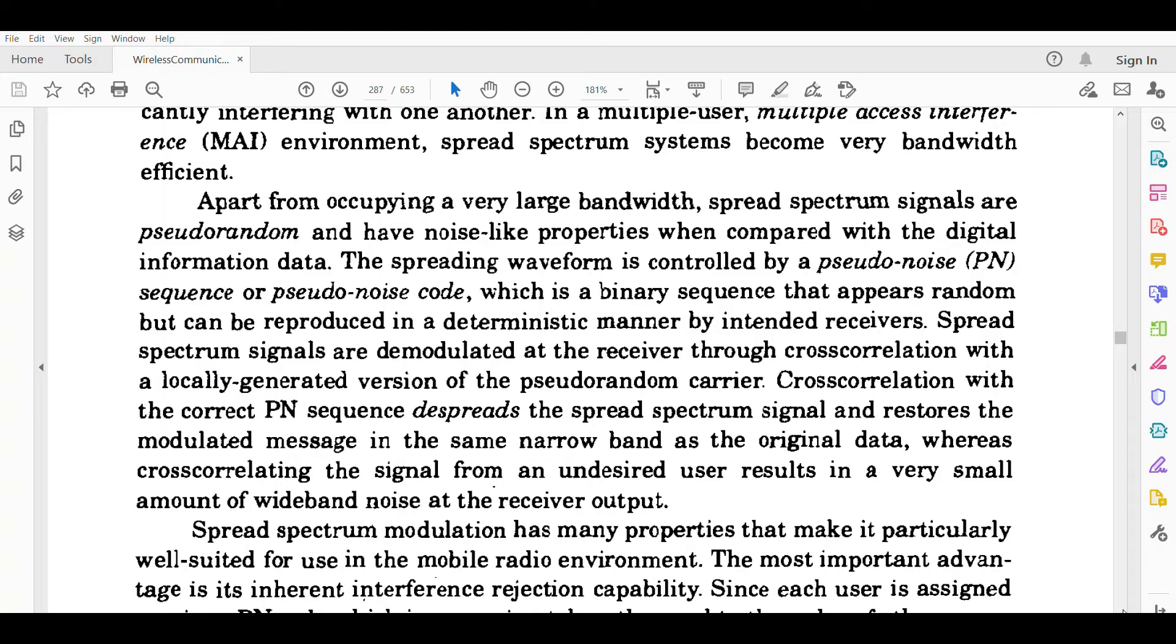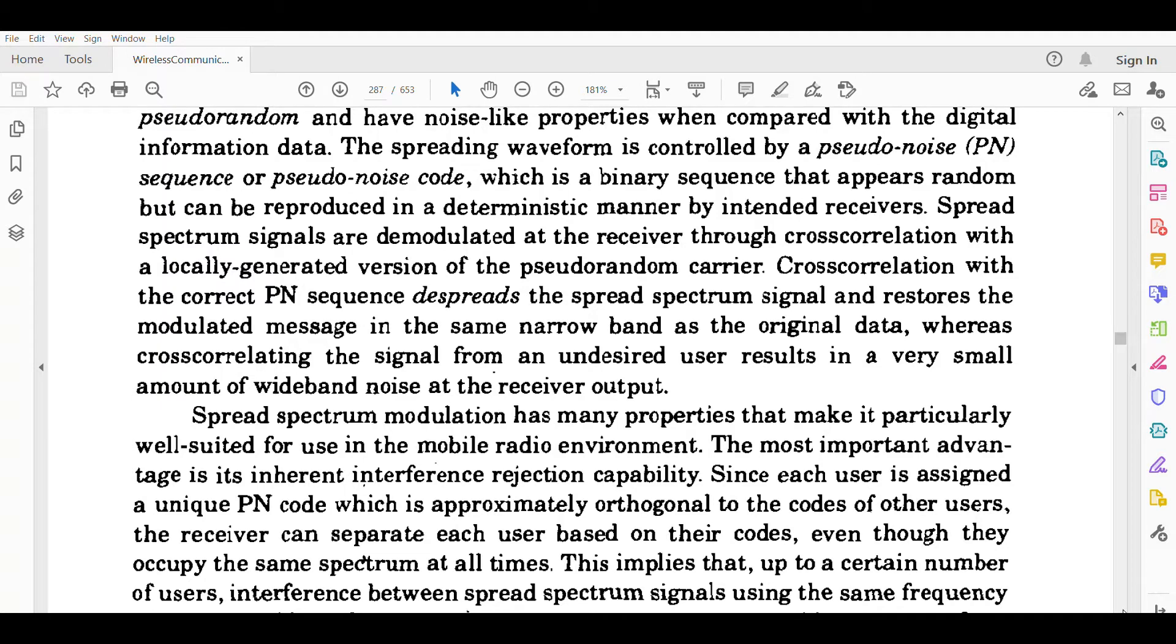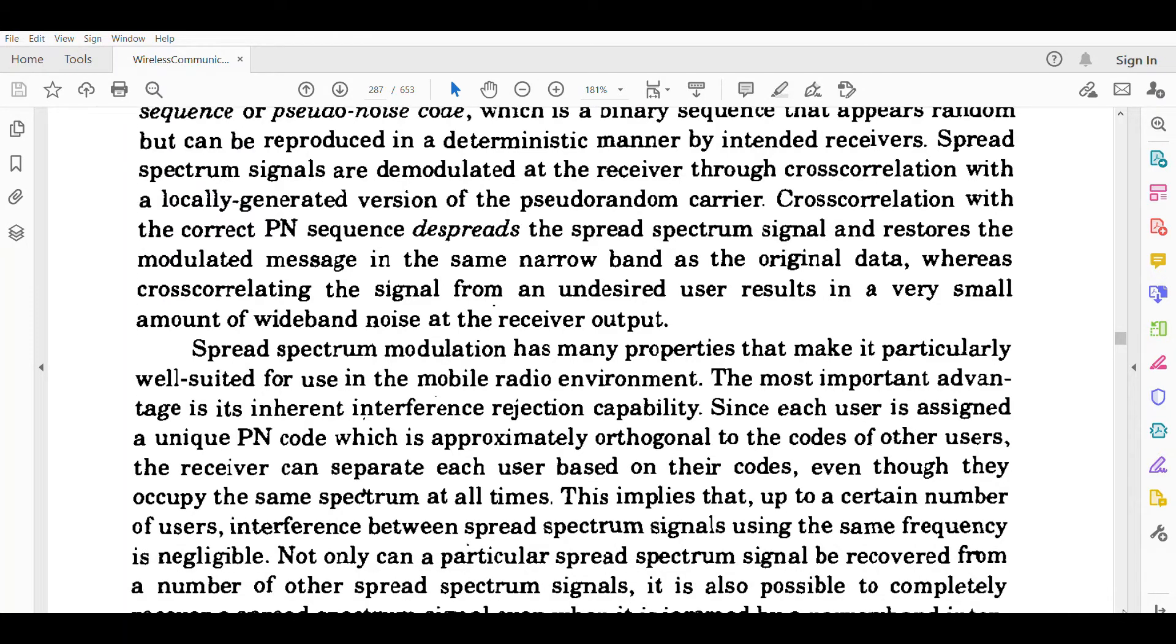This is a binary sequence that appears random but can be reproduced in a deterministic manner by intended receivers. Spread spectrum signals are demodulated at the receiver through cross-correlation with a locally generated version of the pseudo-random carrier. Cross-correlation with the correct PN sequence de-spreads the spread spectrum signal and restores the modulated message in the same narrowband as the original data. Whereas cross-correlating the signal from an undesired user results in a very small amount of wideband noise at the receiver output.